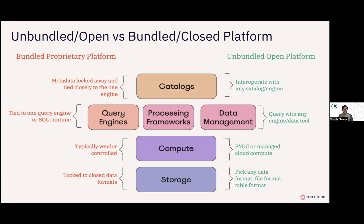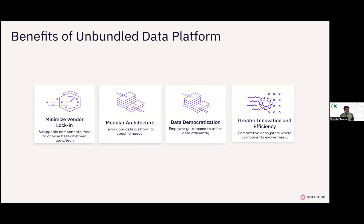If we compare a traditional bundled proprietary platform — think a data warehouse — storage is locked to closed data formats, compute is controlled completely by the vendor, and you're tied to one query engine. Your catalog and metadata are locked away and tied to one engine and one vertical stack. In contrast, an unbundled open platform lets you pick any file format or table format for storage, bring your own compute cluster or use a vendor's managed compute, and query or manage this data with any engine — open or closed. You have the freedom to choose and interoperate with many catalogs and engines.